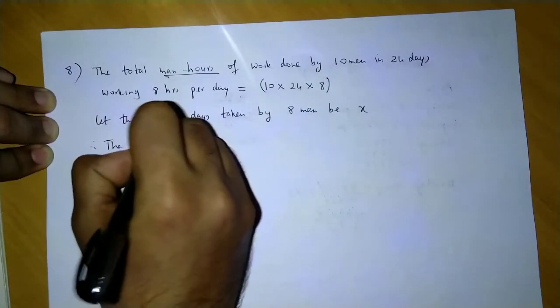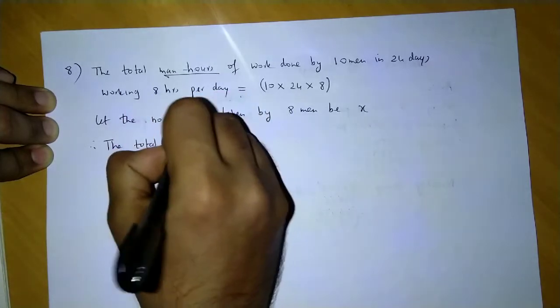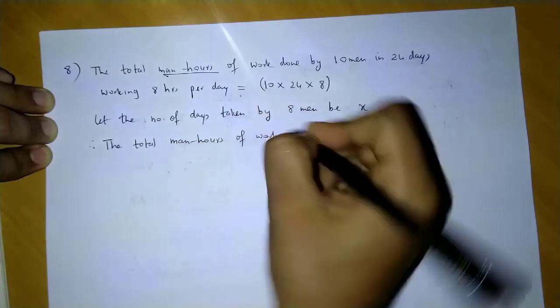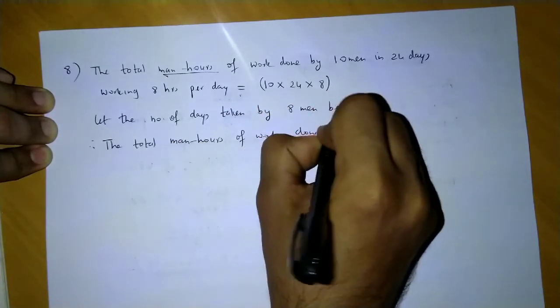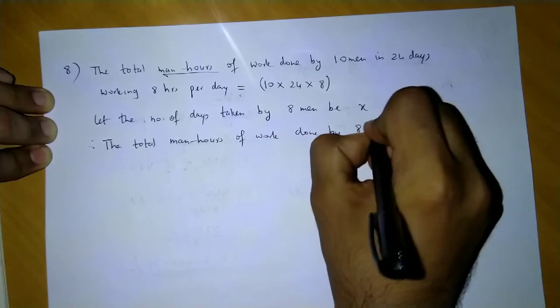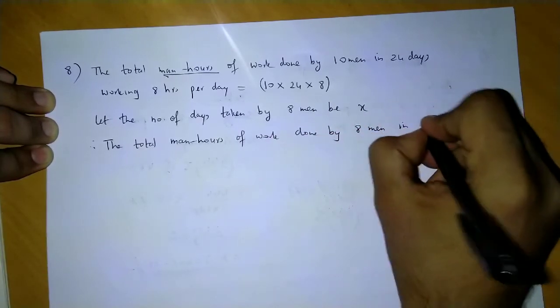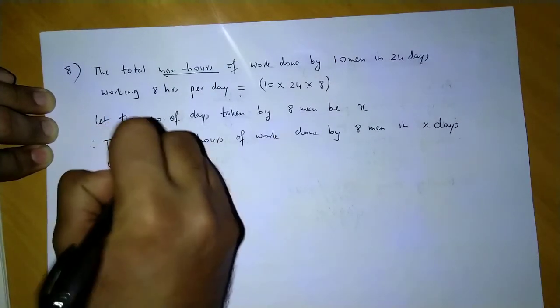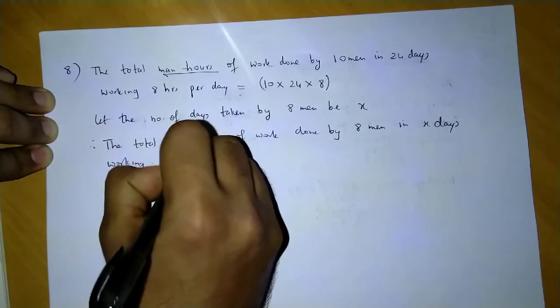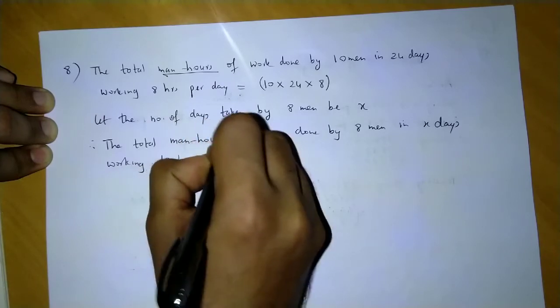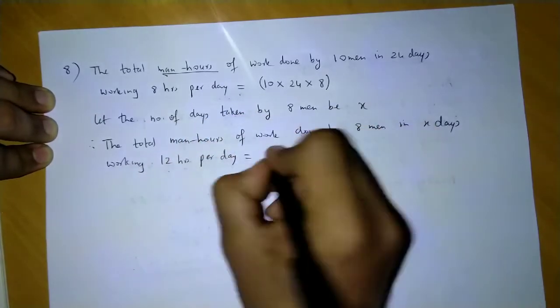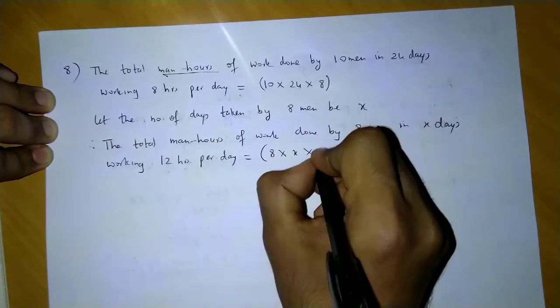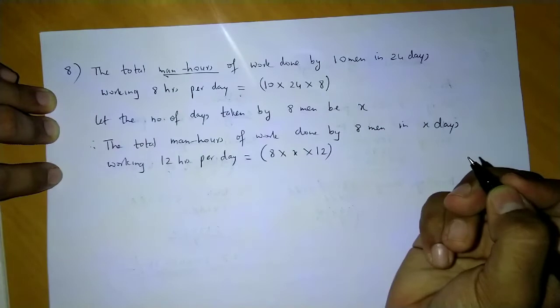Therefore, the total man hours of work done by 8 men in x days working 12 hours per day: there is 8 men, there is x days, and 12 hours per day. So how many man hours will be done?